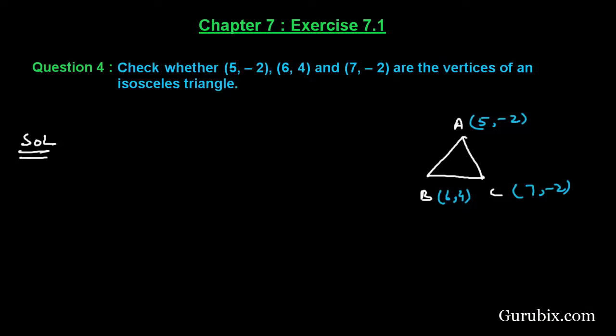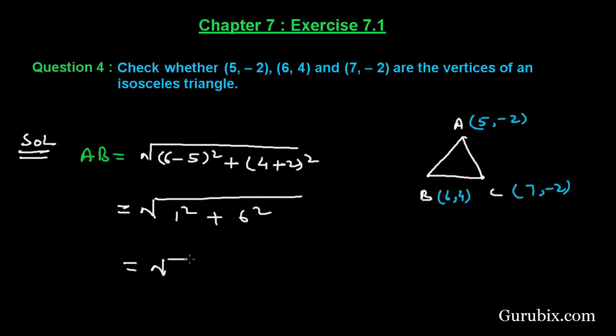Now we shall apply the distance formula to find the distance between A, B, B, C, and C, A. Let us find the distance between points A and B using the distance formula. In distance formula, we find the square root of (x2 - x1)² plus (y2 - y1)². Here x2 is 6 and x1 is 5, so we shall find the square of (6 - 5). Plus y2 is 4, y1 is -2, so if we subtract -2, it will be plus 2. If we further solve it, this equals 1² plus 6², which means square root of 1 plus 36, which means square root of 37.